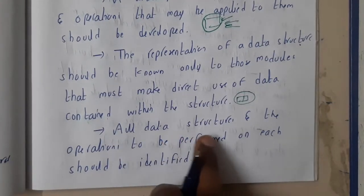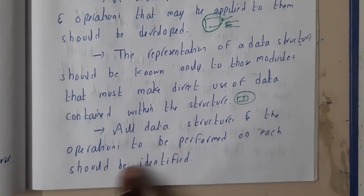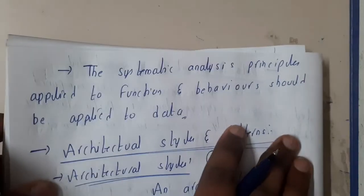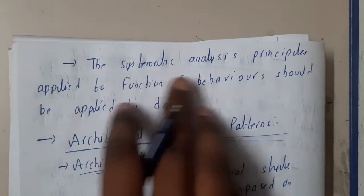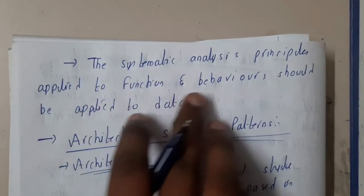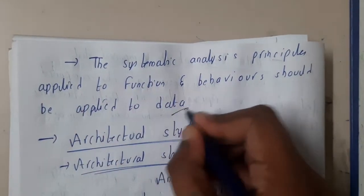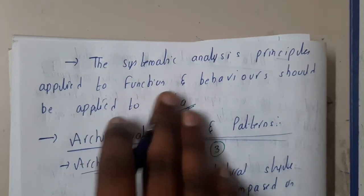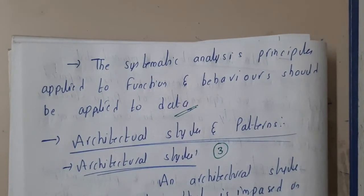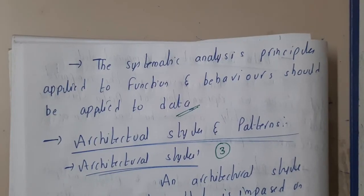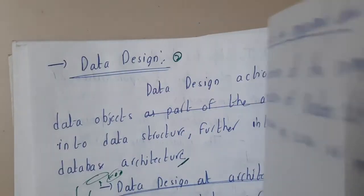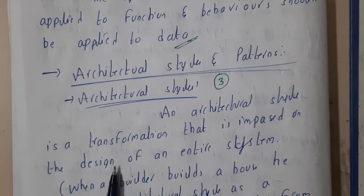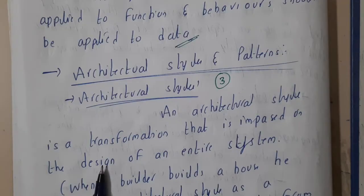All data structures and the operations to be performed on each should be clearly identified — they should not be completely random but must have systematic organization. The same principles of systematic analysis applied to functions and behavior should also be applied to data. That covers the basic introduction to data design. In the next lecture, we will go through architecture styles and patterns.